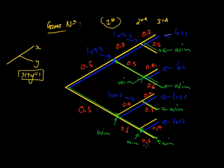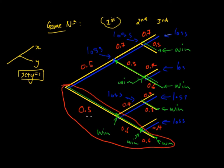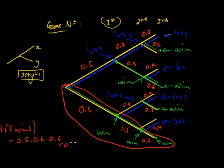If you want to know the probability of a specific outcome — say win-win-win — you just follow that path on the tree diagram and multiply the probabilities. The probability of three consecutive wins is 0.5 × 0.6 × 0.6 = 0.18. So they have an 18% chance of winning all three games.